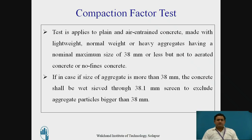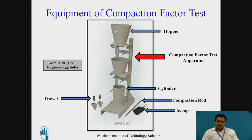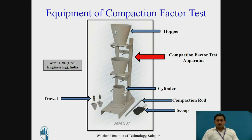If the size of aggregate is more than 38 mm, the concrete shall be wet sieved through the 8.1 mm sieve screen and the largest particles more than 38 mm should be removed. This slide is showing the compaction factor test apparatus. You can observe that there are two stages in the apparatus: two hoppers and at the bottom there is a cylinder. There are various tools which are used for filling the concrete in the hoppers at the top.